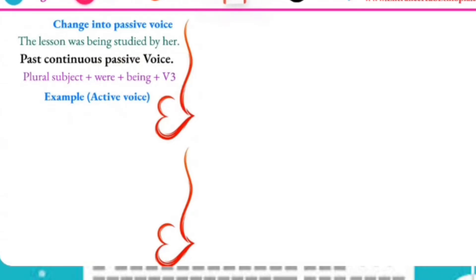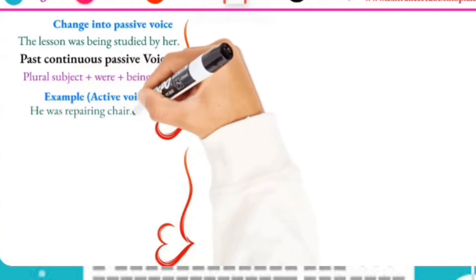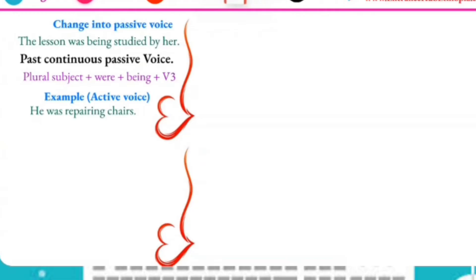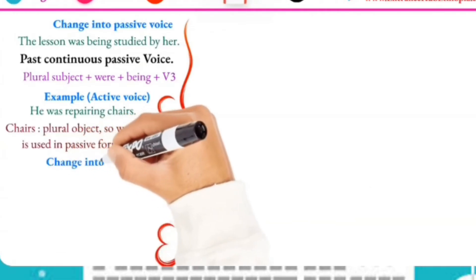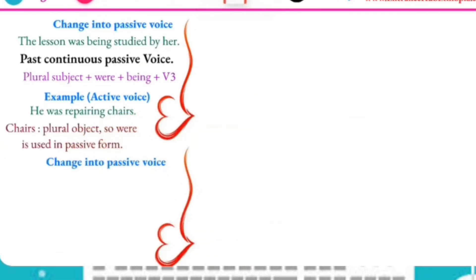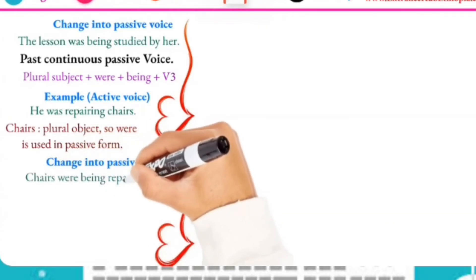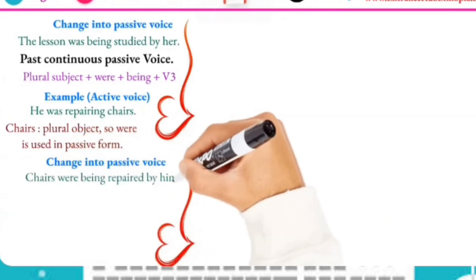For example: 'He was repairing chairs' — active form. The passive form is: 'Chairs were being repaired by him.' Here, the plural object 'chairs' becomes the subject, taking 'were being repaired.'